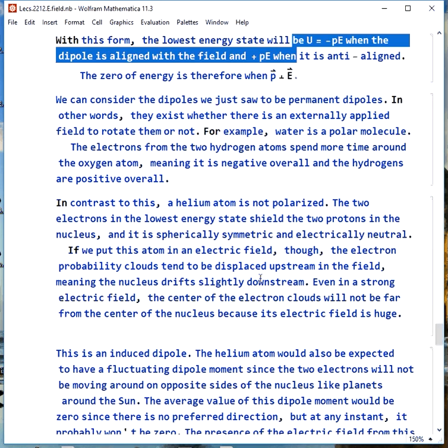We can consider the dipoles we just looked at to be permanent dipoles, and that means they exist whether there's a field to rotate them or not. Water is a permanent dipole. If you have just one water molecule by itself, the positive charge and the negative charge separate. The electrons from hydrogen spend more time at the oxygen atom, so they may get more negative and the hydrogen is more positive overall.